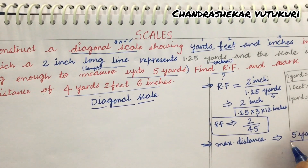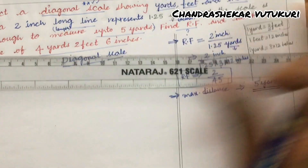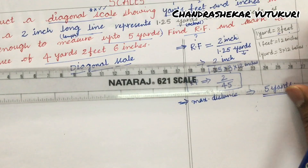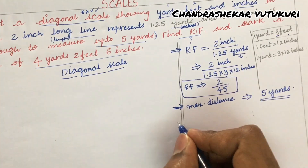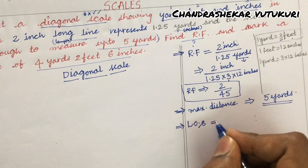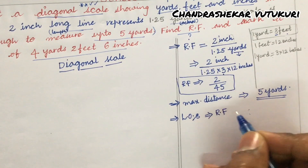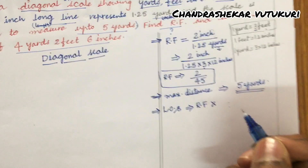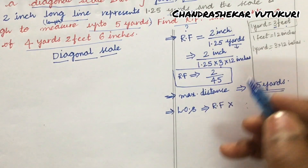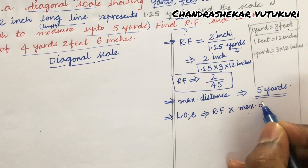I cannot plot 5 yards directly on my drawing sheet, so I need to work out the length in centimeters or millimeters. The length of the scale to be plotted on the drawing sheet is calculated as RF multiplied by the maximum distance. RF is 2/45 and the maximum distance is 5 yards.